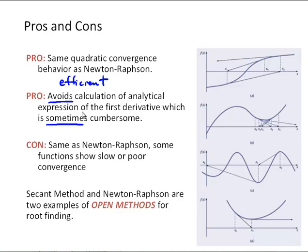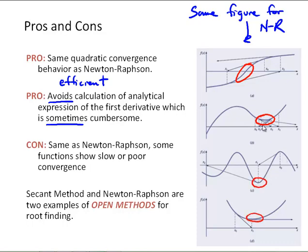One con, similar to Newton-Raphson, some functions are going to show slow or poor convergence. And this is the same figure I went through for Newton-Raphson, basically showing different situations where the algorithm does not converge on a root because of how the function is behaving. So, those will create a real problem with a problem. So, here's two components and the function that can cause problems.